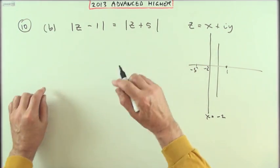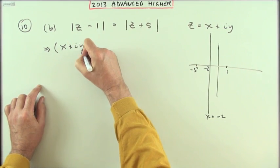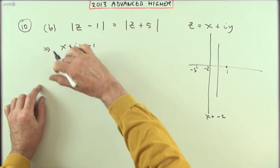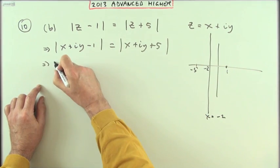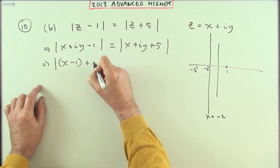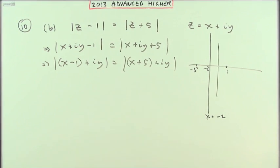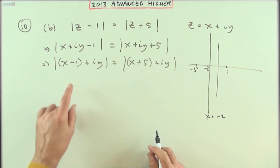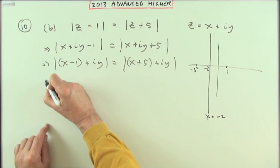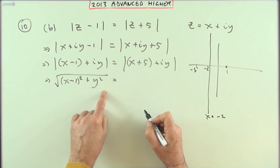If z equals x plus iy, that means I've got x plus iy minus one should be the same as x plus iy plus five. Tidying that up: (x-1) plus iy is the same as (x+5) plus iy. The modulus means the square root of the square of the two components. You could write it that way or just say squared equals squared and put down the individual parts squared.